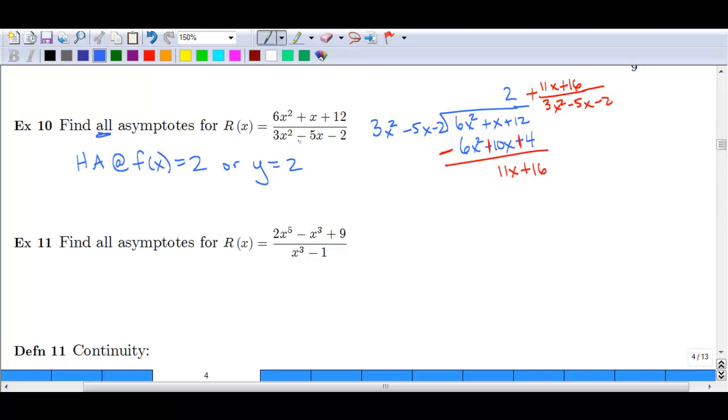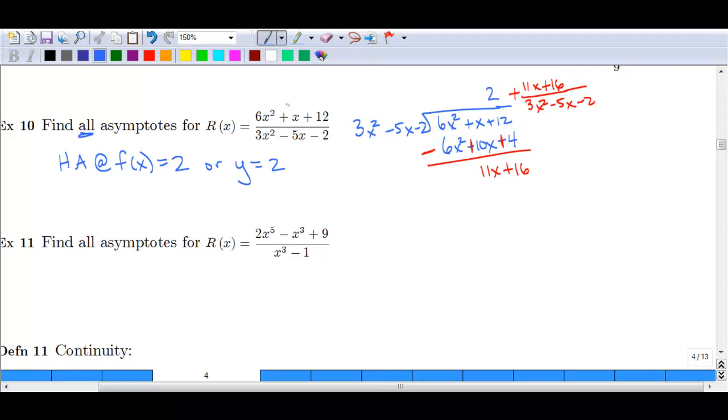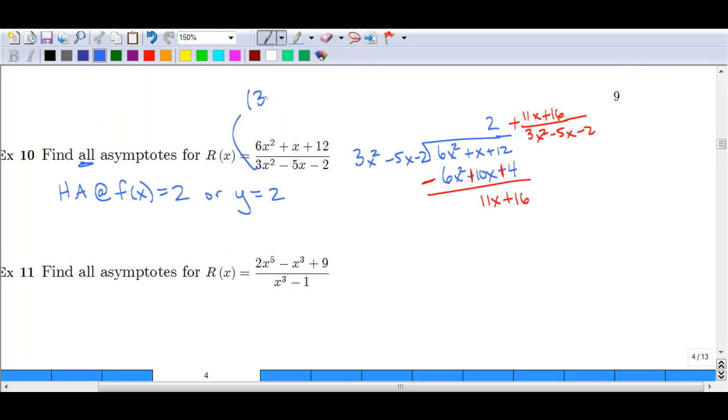The denominator, if we factor that denominator, so we'll go kind of up here above. If we factor, we've got 3x and x. We're going to put the 2 here and a 1 here, and then we need to make this a negative 5 in the middle. So we'll make this a minus 2 and a plus 1. That would give us 3x squared, a minus 6x, a plus 1x, which would give us our negative 5x, and then a negative 2. So in this case, where this is going to equal 0 are at x equals negative 1 third and at x equals 2. Again, setting each piece equal to 0 and solving for x. So we have two vertical asymptotes, in this case at x equals negative 1 third and x equals 2.